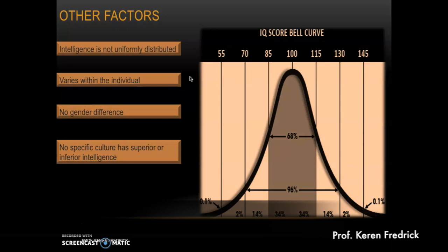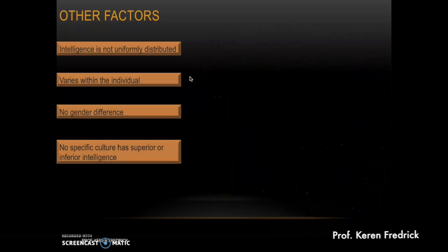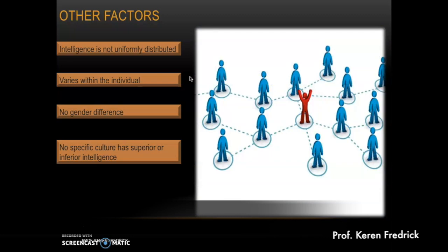Intelligence is not uniformly distributed; some individuals fall at the extremes. It also varies within the individual across age — intelligence tends to stabilize between 16 and 20 years, though the capacity for acquiring new skills continues to develop across the lifespan. So intelligence can differ within the same individual at different points in time.